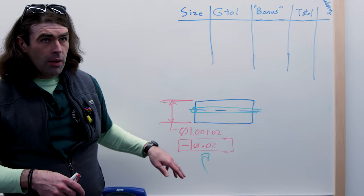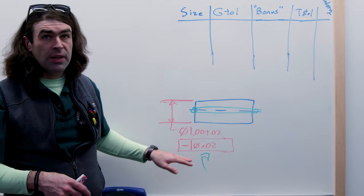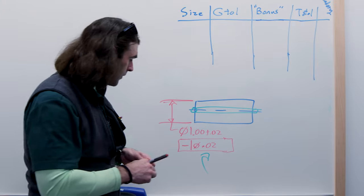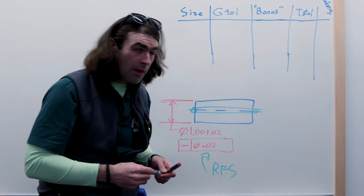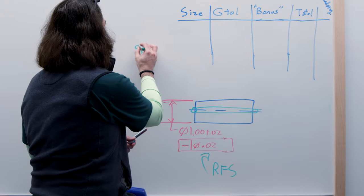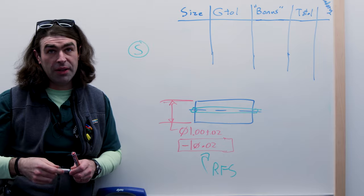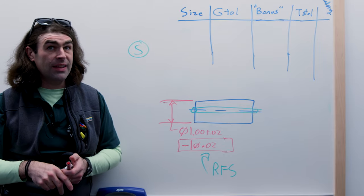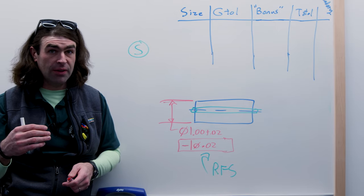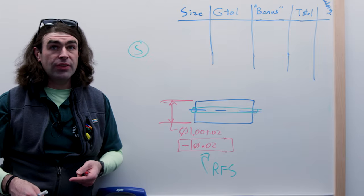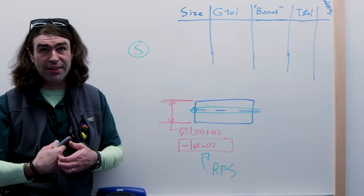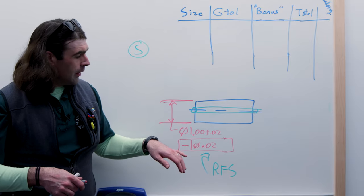Now, without any other information here, this is going to apply at what's known as regardless of feature size. Regardless of feature size does not have a symbol. It used to have a symbol - it used to be an S with a circle around it. So if you're dealing with older drawings, you may see that occasionally. Now it's the default for geometric controls controlling a feature of size. So position, orientation sometimes, and form tolerances sometimes - straightness and flatness specifically.